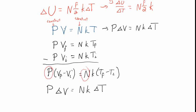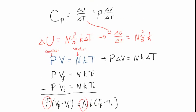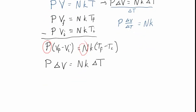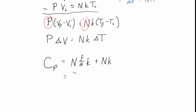So the heat capacity at constant pressure equals Nf over 2 times k plus Nk — or equivalently, the heat capacity at constant pressure equals the heat capacity at constant volume plus Nk. Chemists will write Nk as the number of moles times the gas constant R, which works as well.